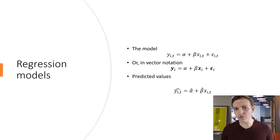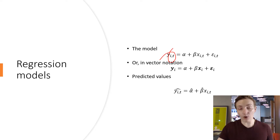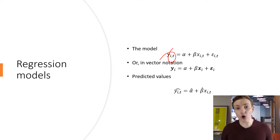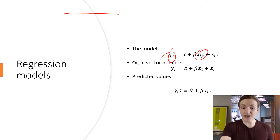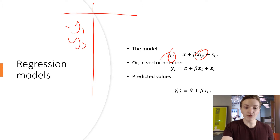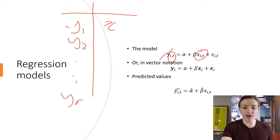Let's start by briefly going over what the regression model might actually look like. We might have a model where we've got a dependent variable y, and y is determined to be a function of a regressor x. x is also called our independent variable. Here you might have a table of various values — y1, y2, all the way down to yn. Similarly, you have x1, x2, all the way down to xn.